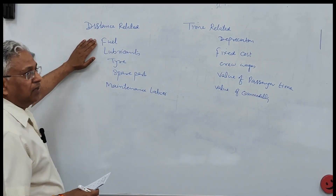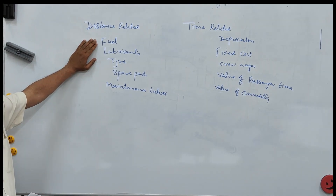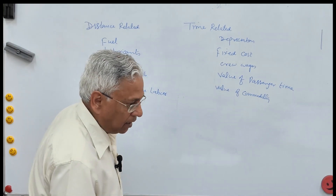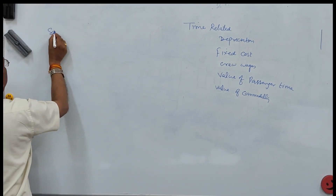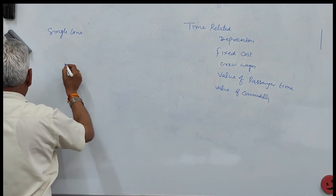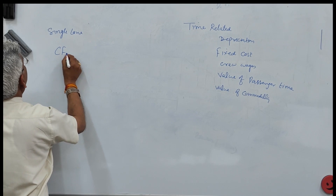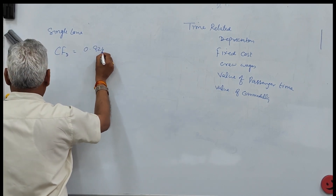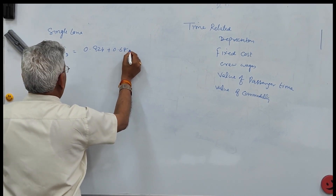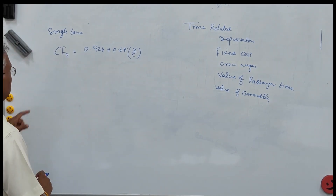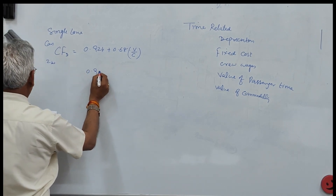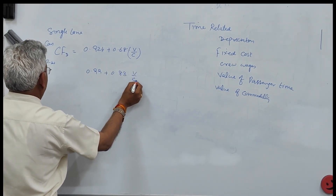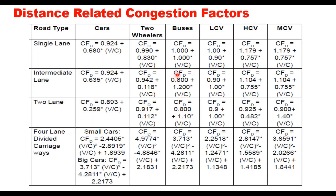Distance-related congestion factors in IRC SP 30 are given in the form of equations. For example, for a single lane road, the distance-related congestion factor for a car is: 0.924 + 0.68 × (V/C ratio). Similarly, for two wheelers you have a corresponding equation.